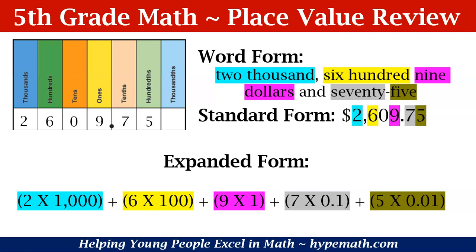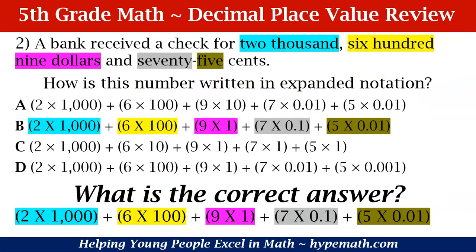Now we need to find the correct answer written in expanded form. We convert from standard form, and in expanded form we have 2 times 1,000, plus 6 times 100, plus 9 times 1, plus 7 times one tenth, plus 5 times one hundredth. One thing to remember: there is a zero in the tens place, so there is nothing we need to represent in expanded form for that zero — since we have nothing times 10, we know it will be zero.